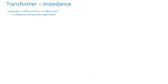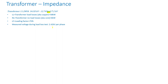Now let's do some calculations with impedance. Consider a transformer rated 11.3 MVA, 34.5 kV delta and 12.74 kV Y-GRD, where GRD means the Y has a grounded neutral. The load losses are 58 kilowatts, core losses are 6 kilowatts, and the loading factor is 75 percent. The measured voltage during the load loss test is 2.42 kV per phase. During the load loss test, rated current is circulated on the high side while the low side windings are shorted. The voltage required to circulate rated current is called the impedance voltage.